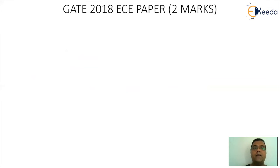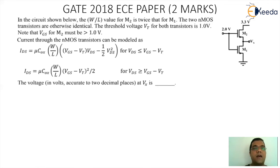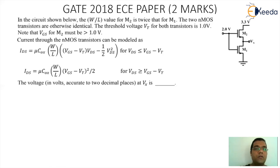The next question is from the GATE 2018 ECE paper, carrying two marks. The question says: in the circuitry shown below, the W/L value of MOSFET 2 is twice that of MOSFET 1. The two NMOS transistors are otherwise identical. The threshold voltage VT of both transistors is 1V. Note that VGS of M2 must be greater than 1V. Current through the NMOS transistor can be modeled as...